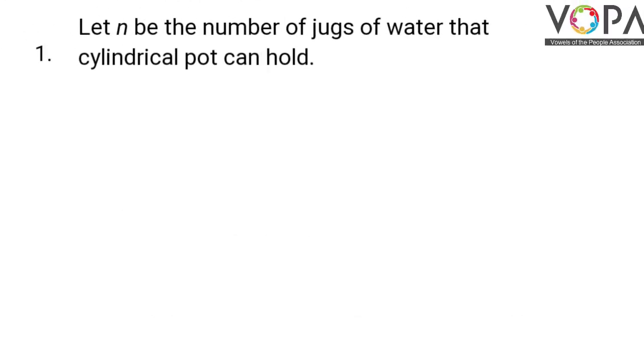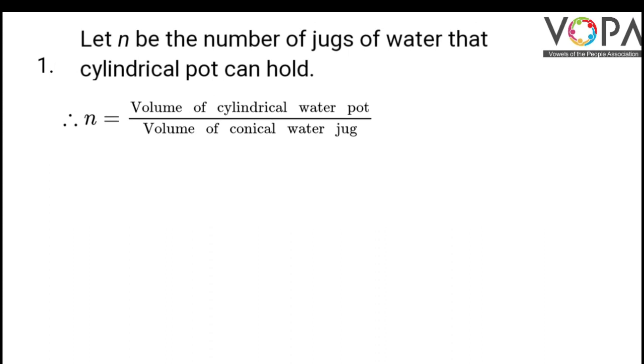We have to find the number of jugs. So let n be the number of jugs of water that cylindrical pot can hold. So n will be equal to volume of the cylindrical water pot divided by volume of conical water jug.